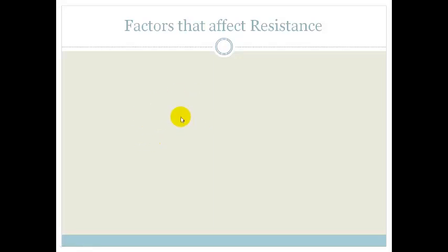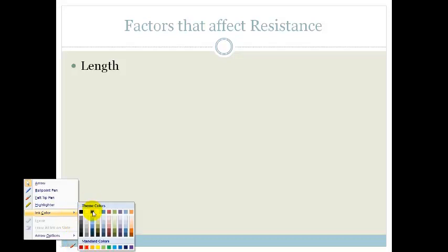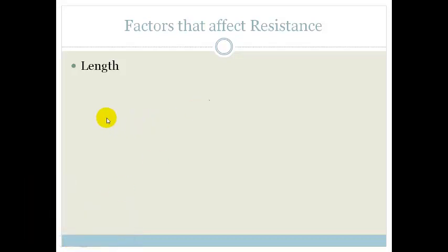Now there are a couple of factors that affect resistance. The first is the length. The longer the resistor, obviously, the more the electrons are going to be bumping into things. So the higher the resistance. The longer, the higher.